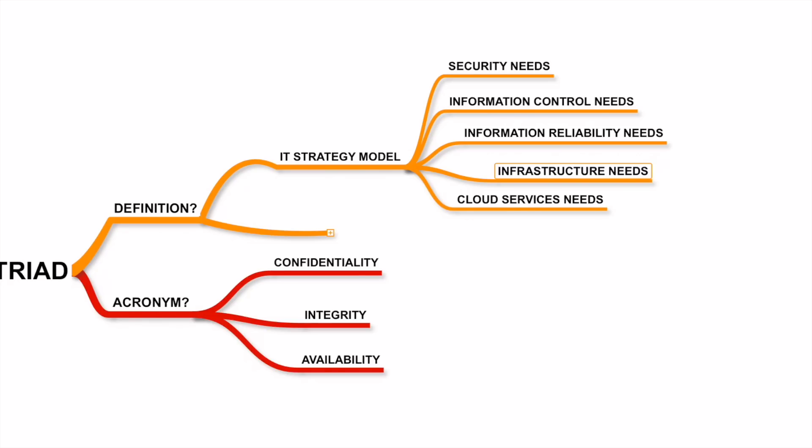As an IT strategy model, it would look at the security needs, the information control needs, the information reliability needs, infrastructure needs, and the cloud services needs of an organization. This is relevant irrespective of how the service is deployed, who is hosting it, or where it is hosted — these areas will need to be vetted.